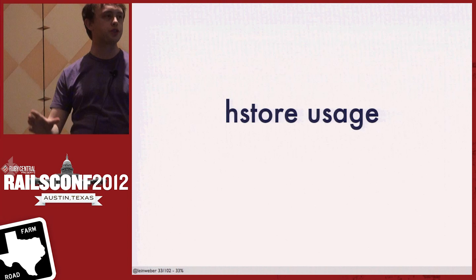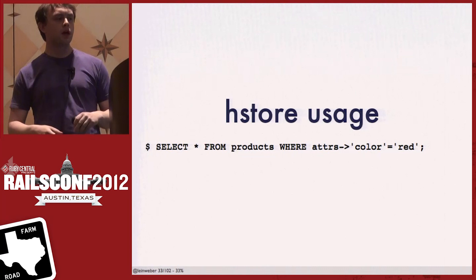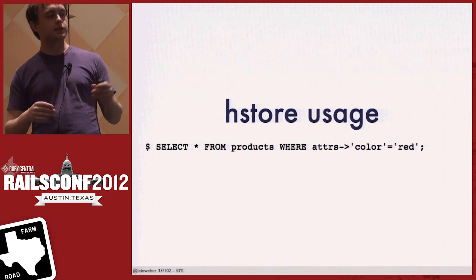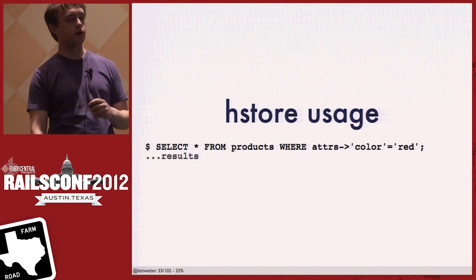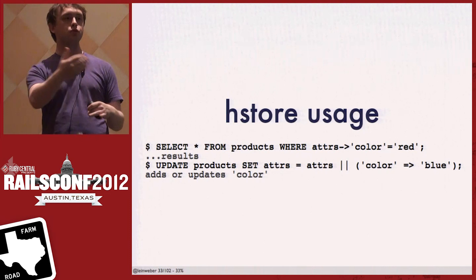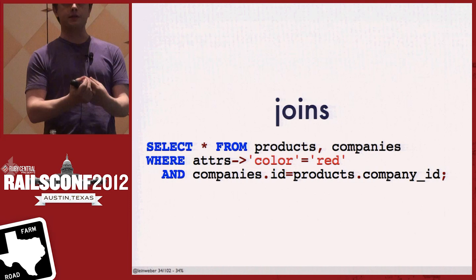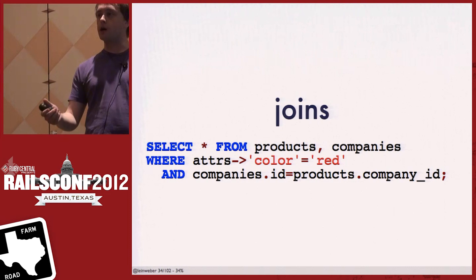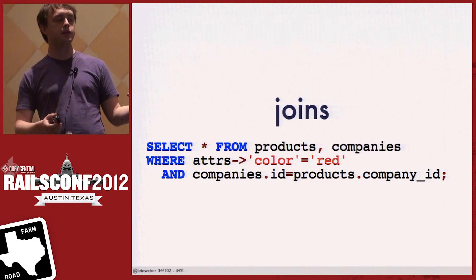Here's how HStore is used if you actually have it in your database. Imagine a products table with an attributes column that is an HStore. With this query I can select all products that have a red attribute in their color key. Here's another one: if I wanted to change all the colors, this will add the color blue to any HStores that don't have a color, and for those that do, the color gets overwritten to blue.